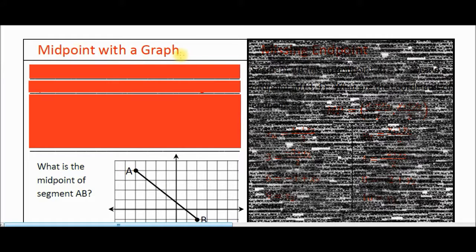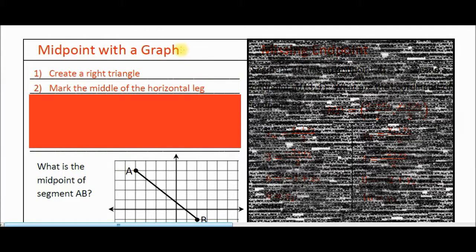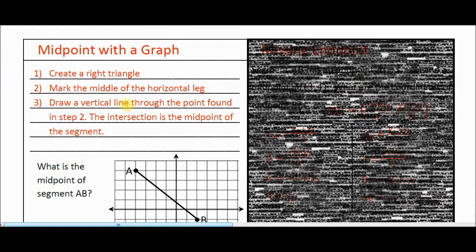Step number one for finding a midpoint with the graph is create a right triangle. This looks a lot like finding the distance between two points with the graph. Second step is mark the middle of the horizontal leg. The leg of the right triangle that's horizontal, meaning it goes left to right. And the last step is draw a vertical line through the point found in step two. The intersection is the midpoint of the segment. So that might seem a little kind of weird or doesn't make sense, but you'll see when I do it that it makes pretty good sense, and it's pretty easy to do.